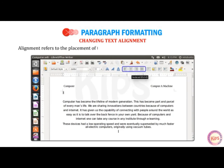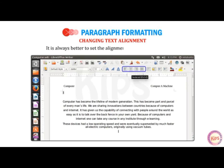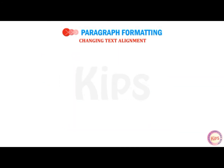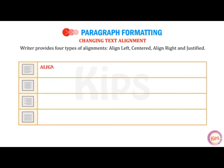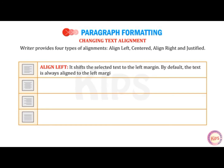Alignment refers to the placement of text on a page with respect to left and right margins. It is always better to set the alignment before you begin typing. You can also select an entire document and then change the alignment. Writer provides four types of alignment: Align Left, Centered, Align Right, and Justified. Align Left shifts the selected text to the left margin. By default, the text is always aligned to the left margin.